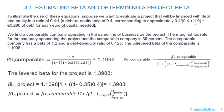To illustrate these equations, suppose we want to evaluate a project financed with a debt-to-equity ratio of 0.4. We need a comparable company operating in the same line of business. The marginal tax rate for both the sponsoring company and the comparable company is 35% — so no change in tax rate. The comparable company has a beta of 1.2 and a debt-to-equity ratio of 0.125.